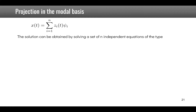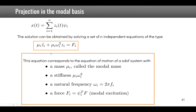The full solution x(t) is obtained by solving independently for each z_i. Each z_i is the solution of a single degree of freedom system with modal mass mu_i, stiffness mu_i·omega_i-squared, natural frequency omega_i, and modal force psi_i-transpose·f. The force will be different for each mode.